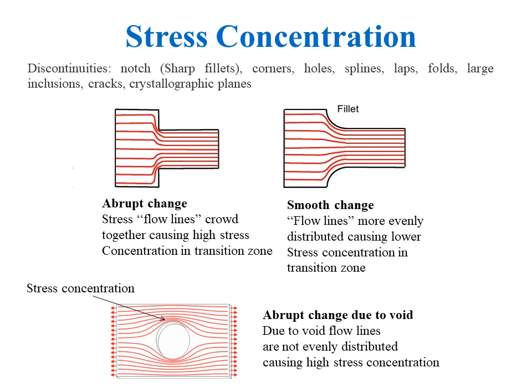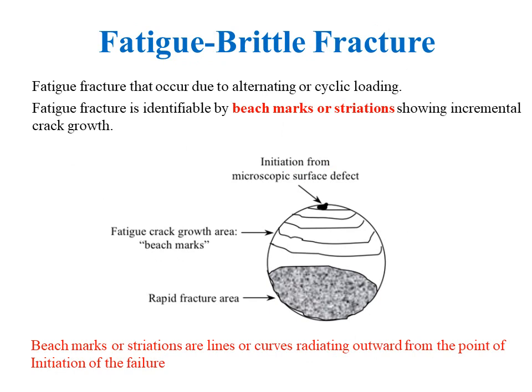Brittle fracture can also occur due to overloading. Another type of brittle fracture arises due to cyclic loading or cyclic force — this is known as fatigue fracture. Fatigue fracture occurs due to alternating or cyclic loading and only occurs after a considerable period of service. A fatigue fracture can be easily recognized from the appearance of a smooth and polished surface corresponding to slow crack growth. During crack propagation, characteristic patterns of concentric rings spread over the smooth region — these are known as beach marks or striations, which are lines or curves radiating outward from the point of initiation.